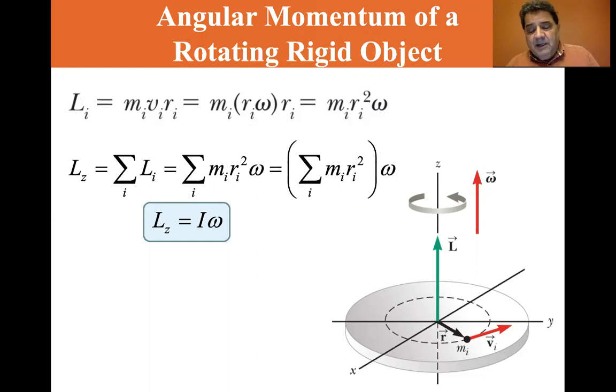So the sum of mi ri squared times omega—that in parentheses is how you calculate the moment of inertia of an object. So I omega.